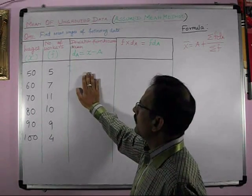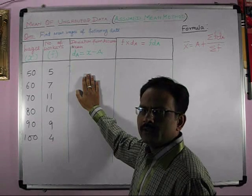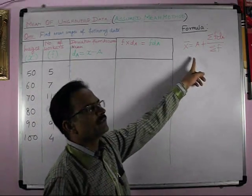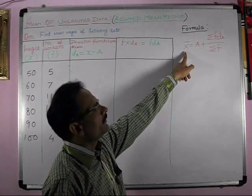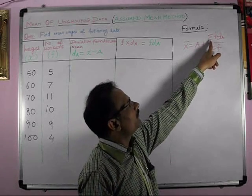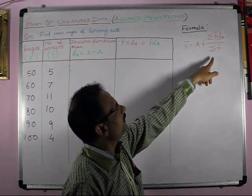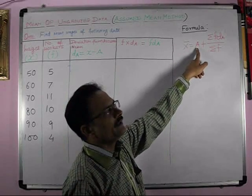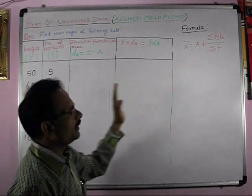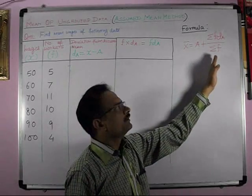Now, what we have to do first before starting to solve this problem. First of all, we see the formula of assumed mean method. The formula of assumed mean method is X bar, which is mean, is equal to A plus summation of F into DA upon summation of F. We have to do the calculation according to this formula.